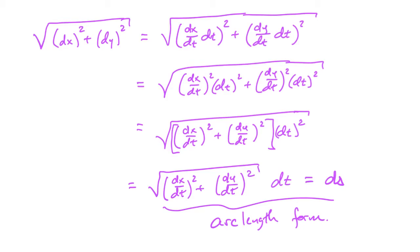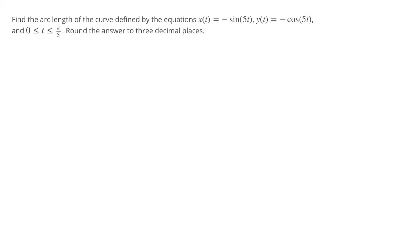Now, let's take a look at our actual problem. So, what we want then is the arc length of this curve and so given that our x is going to be a minus sine 5t, well, that tells us that our dx/dt is just going to be a negative 5 cosine of 5t, and likewise for our y being a minus cosine 5t that tells us that our dy/dt will then be a 5 sine of 5t.